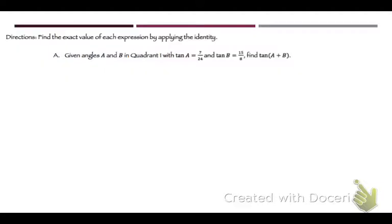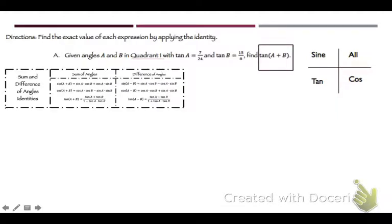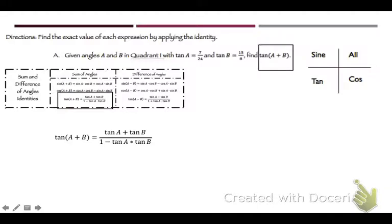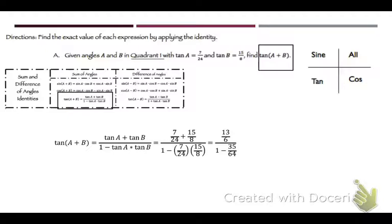Now let's look at this one. Given angles A and B in quadrant 1, tangent of A is 7/24 and tangent of B is 15/8. We need to find tangent of A plus B. The formula only uses tangent values, and we already have both. So we plug in: (7/24 + 15/8) divided by (1 minus 7/24 × 15/8). That gives 13/6 divided by (1 minus 35/36).